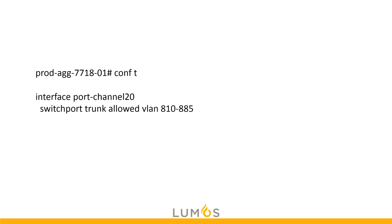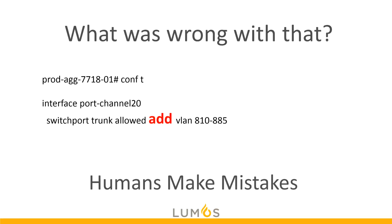What happens if we need to make a change? We go into config T, interface port channel 20, and use the command switchport trunk allowed VLAN 810 to 885. Who can tell me what's wrong with this command? We probably just experienced an RGE — a resume-generating event — at a minimum, and a CLM — a career-limiting move — at a maximum, depending on how costly the production traffic we just took down was. What did we forget? We forgot the keyword 'add.' The point is that humans make mistakes. Your boss may understand — but you're still fired, depending on the revenue lost.